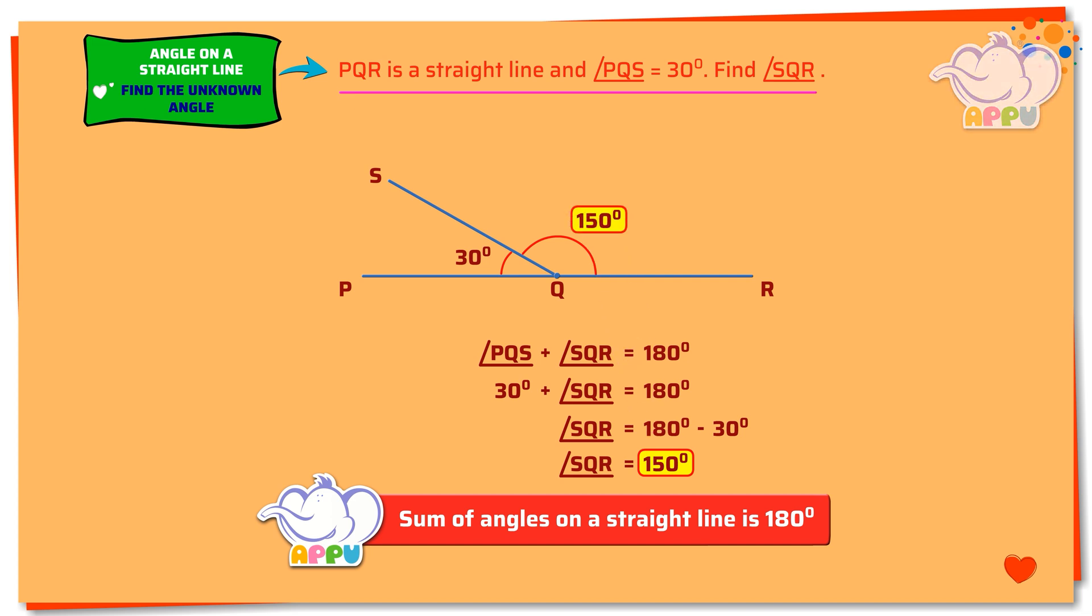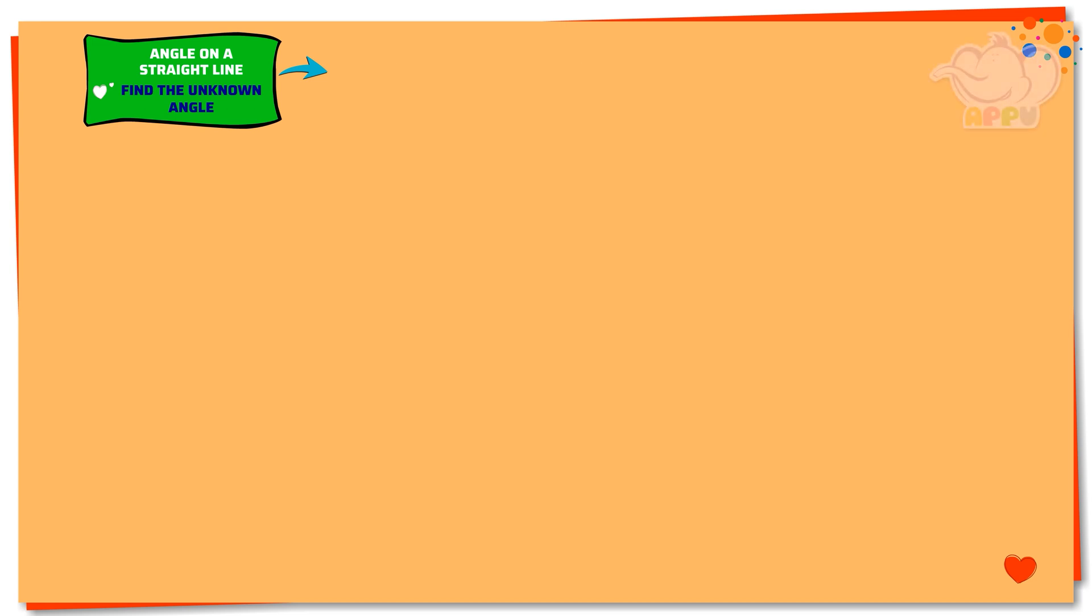Now you've figured it out. ABC is a straight line, and angle ABD equals 95 degrees. Find angle DBC.